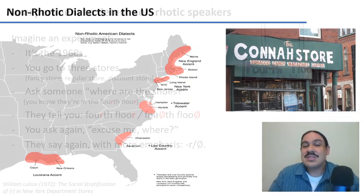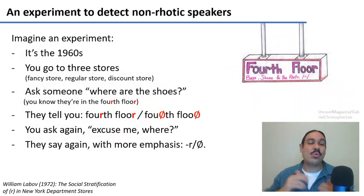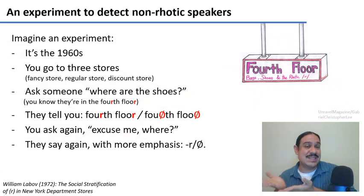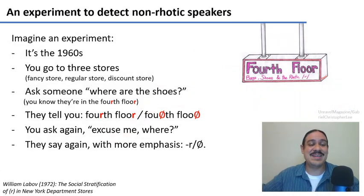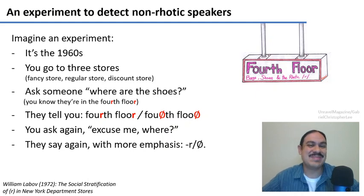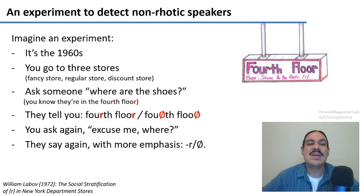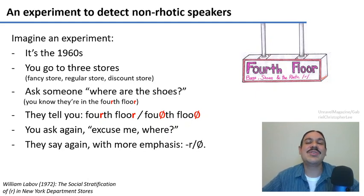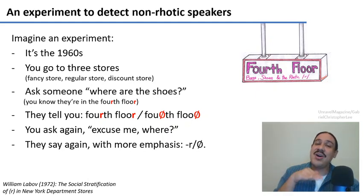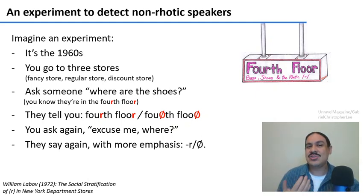Imagine you wanted to find out who uses the R and who doesn't, and you're in New York in the 1960s. This is a very famous experiment by sociolinguist William Labov. You're in the 60s, in New York, and you want to figure out who uses the R and who doesn't. You go to three stores.